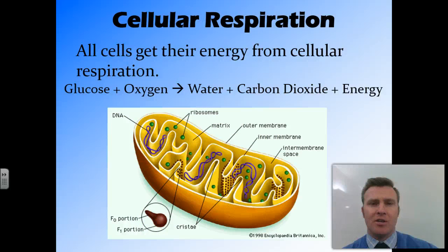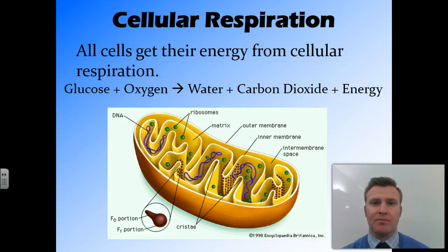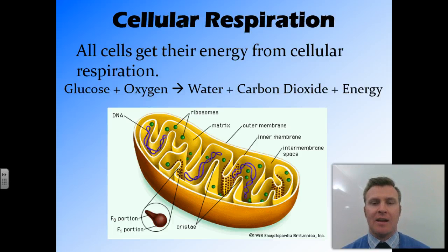Cellular respiration occurs in the mitochondria inside cells and it's where the cells get their energy from that drives all the processes that occur around the body. It involves glucose and oxygen being broken down into water and carbon dioxide, which releases a chemical called adenosine triphosphate, which is energy in the body and that energy can be used for other things.